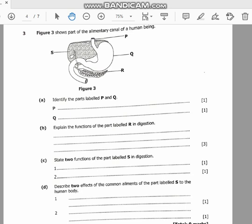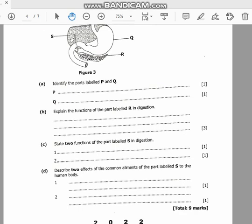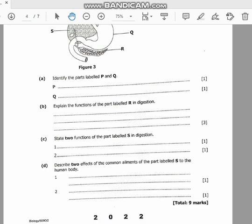Then D, describe two effects of the common ailments of the part labeled S. We're still on the liver. So two elements of the liver, in other words we can just say liver disease. Liver diseases can have different effects on the human body depending on the type of disease.